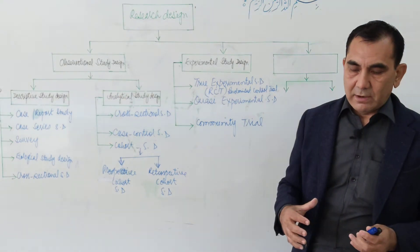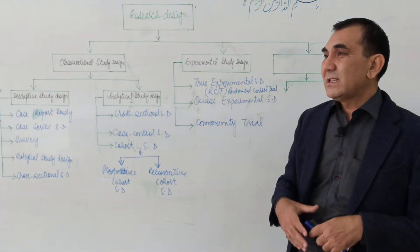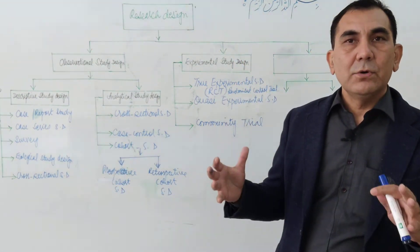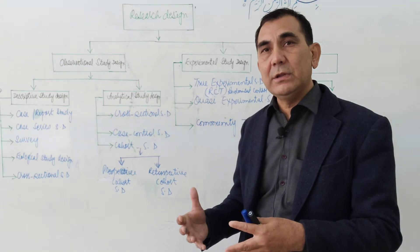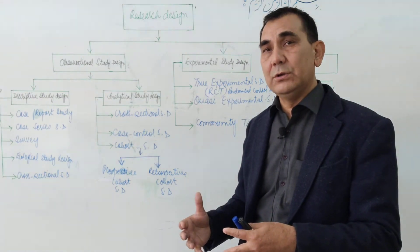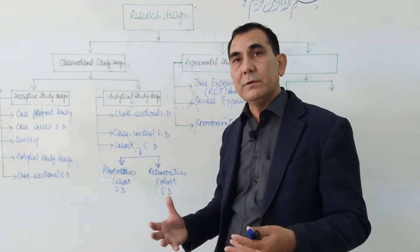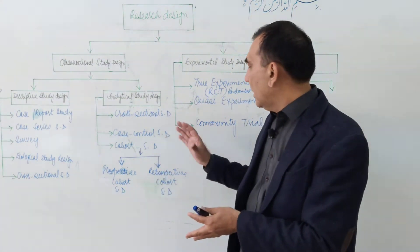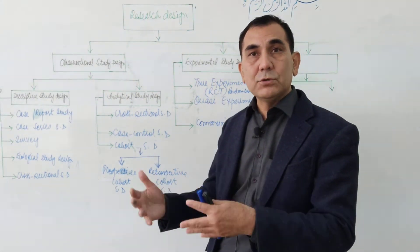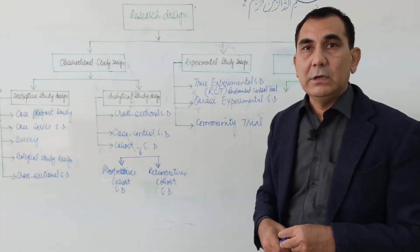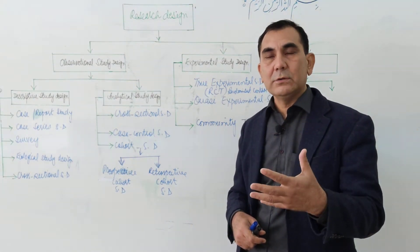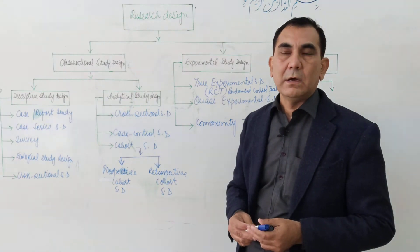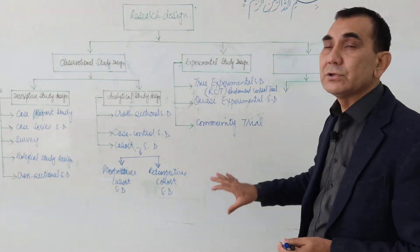Other community trial examples include teaching hand washing techniques, self breast examination to girls at school level, educating people about contraceptive use, hand washing to prevent COVID-19 or infectious diseases, and providing health education and training for vaccination access to women during pregnancy. All of these are examples of the community trial.